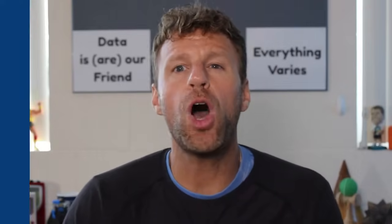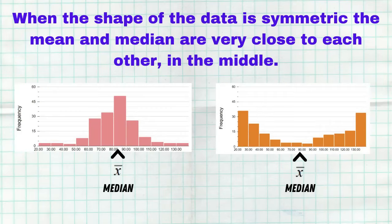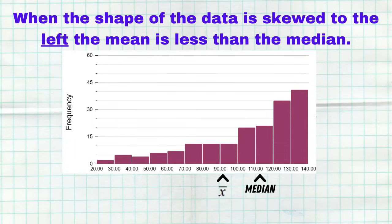Tip number three: know the difference between the mean and the median — not just what they are and how they're found, but be able to compare them. If you have a distribution that is symmetric, then the mean and the median are gonna be very close to each other right in the center. But if your data is skewed to the right, the mean is gonna go a little bit higher, meaning it's gonna be greater than the median. If your data is skewed to the left, the mean gets pulled lower and is gonna be less than your median. Being able to compare the mean and median based on the shape is a huge important topic for the AP exam.